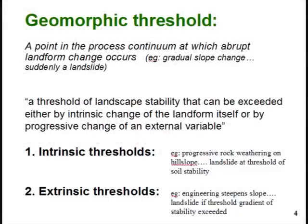Schumm defines thresholds as points where abrupt changes occur — for example, the point where a landslide occurs on a previously stable hill slope, or the point at which gully erosion is initiated. If the triggering factor is something progressive and internal to the system, he refers to an intrinsic threshold, and if the trigger is an external driver, then he refers to an extrinsic threshold.